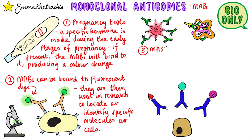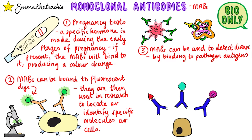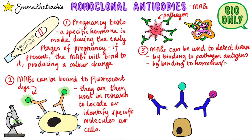Monoclonal antibodies can also be used to detect diseases. This can be done by binding to the pathogen's antigens. They can also bind to other chemicals or hormones in the blood that are only produced in high levels if a person has a disease.